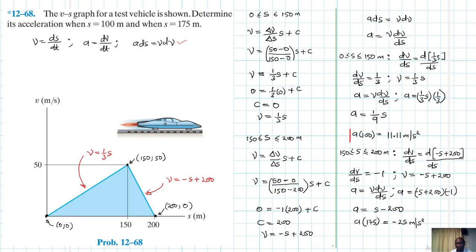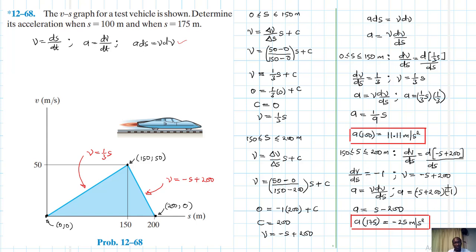To outline the solutions: the acceleration at s = 100 meters (in the interval 0 to 150) is 11.11 m/s², and the acceleration at s = 175 meters (in the interval 150 to 200) is −25 m/s². I hope this video was helpful — give it a thumbs up, keep subscribing, and I'll see you in my next screencast.